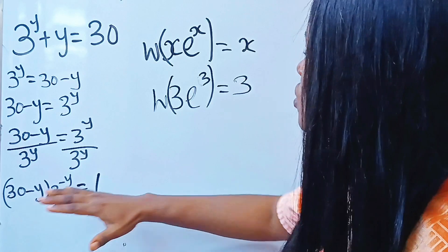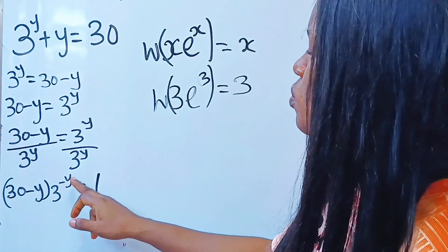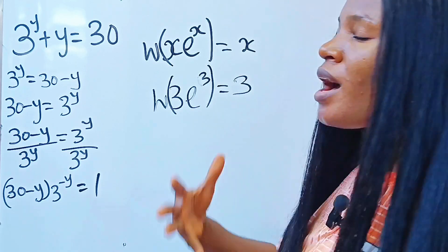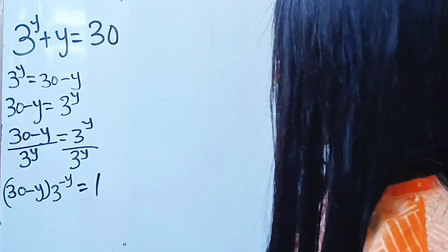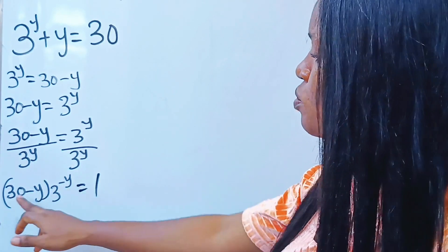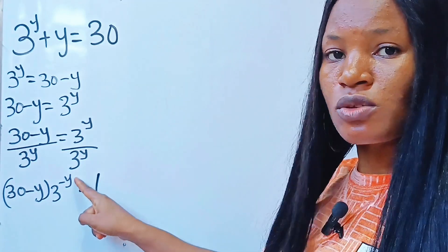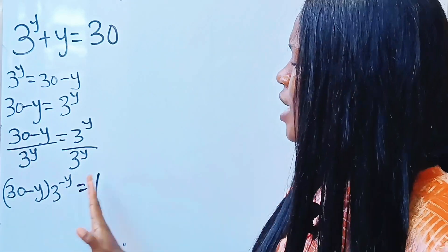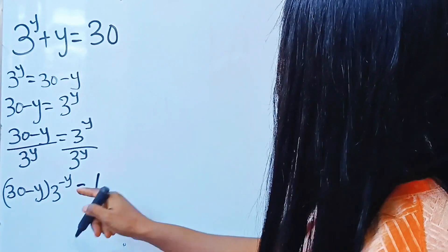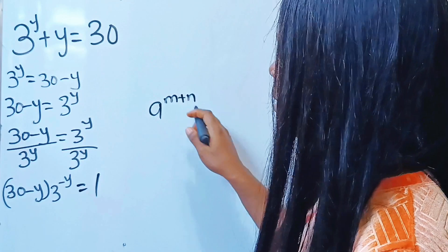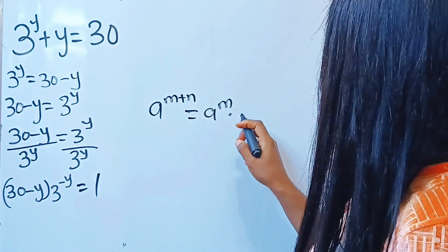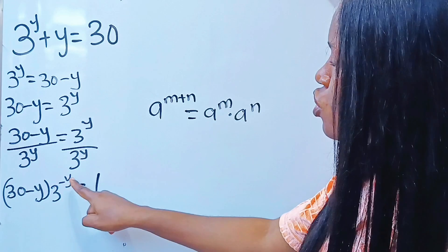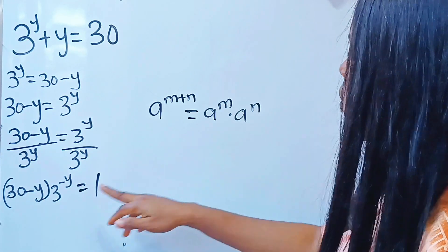We're going to manipulate this question to look exactly like x·e^x. Whatever I have as my numerator must match, and the base must be e. Looking at what we have, I can make the power look right if I introduce plus 30 into the exponent. To do that correctly, recall that a^(m+n) = a^m · a^n, so I just need to multiply both sides by 3 to the power of 30.